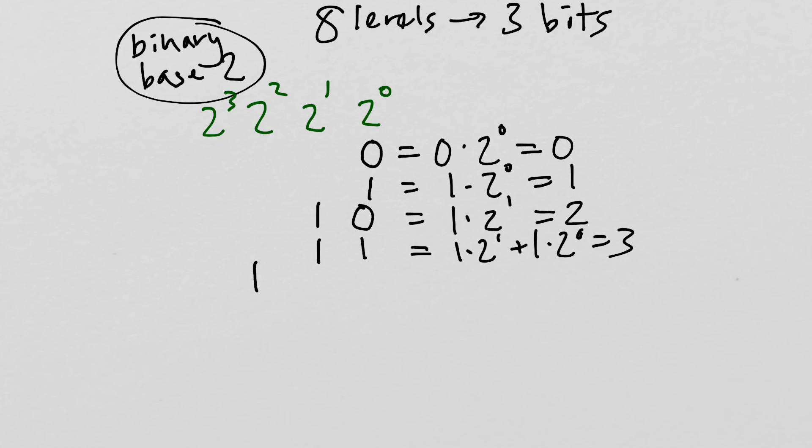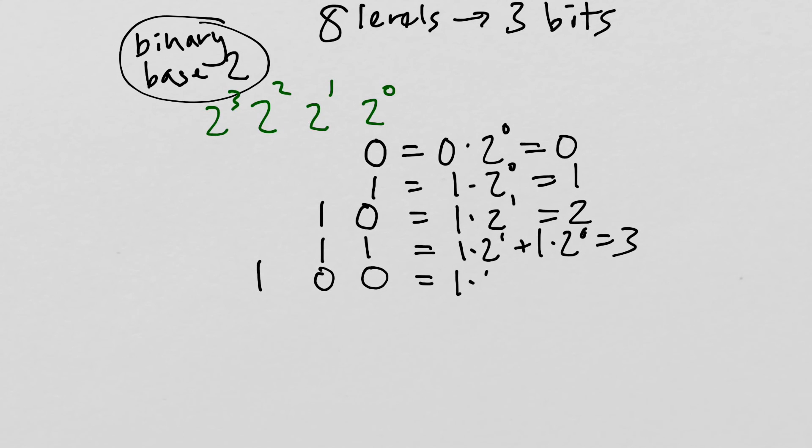And if I have 1, 0, 0, where now I have a 1 in the 2 to the 2nd slot, that would be 1 times 2 to the 2nd, equals 4. I could then get 5 by putting a 1 in the 2 to the 2nd slot, and a 1 in the 2 to the 0th slot, and then a 0 here in the 2 to the 1st slot. So that's 5.